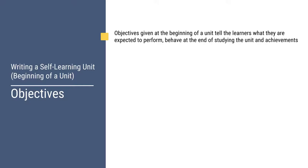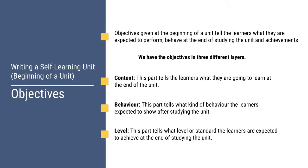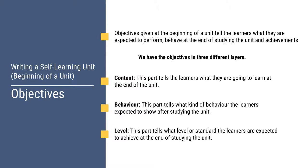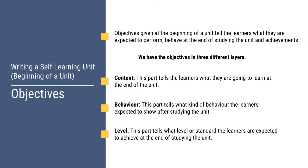The objectives also tell learners how they are expected to behave after studying the unit, and what kind of achievement they are going to achieve. Objectives have three components: the first is content, the second is behavior, and the third is level. Content tells what the learners are going to learn — what kind of content the unit is going to cover. Behavior tells what kind of behavior the learners are expected to exhibit at the end of studying the unit. Level tells the learners what standard they are supposed to achieve after studying the unit.